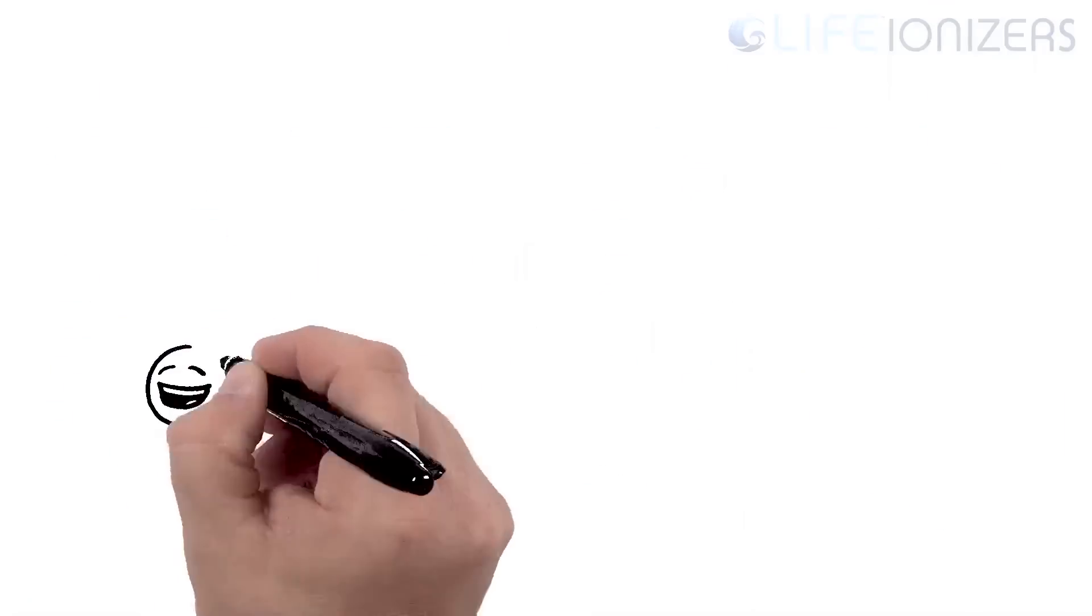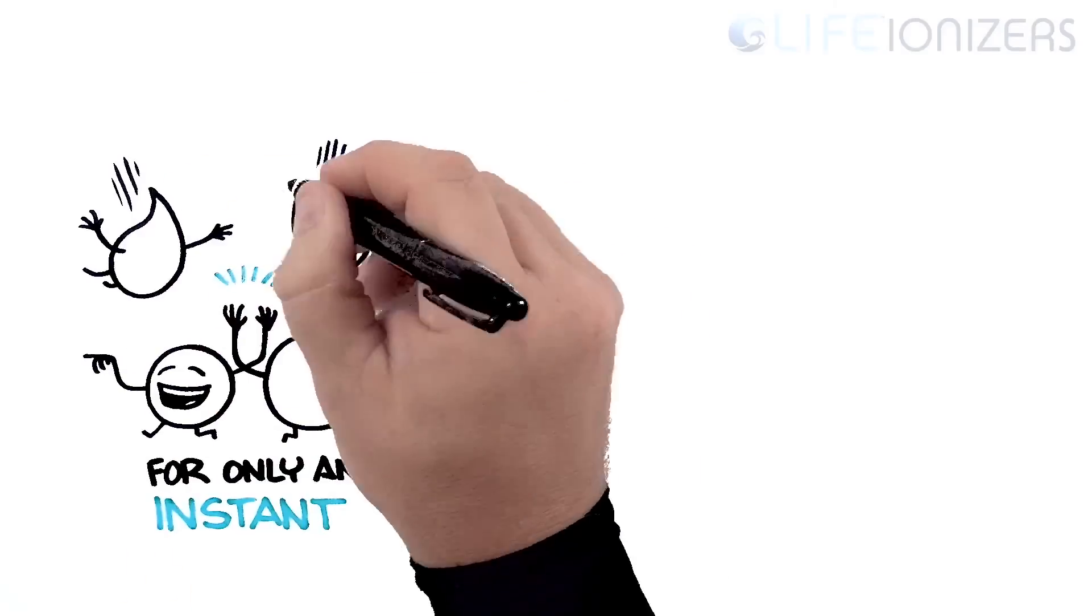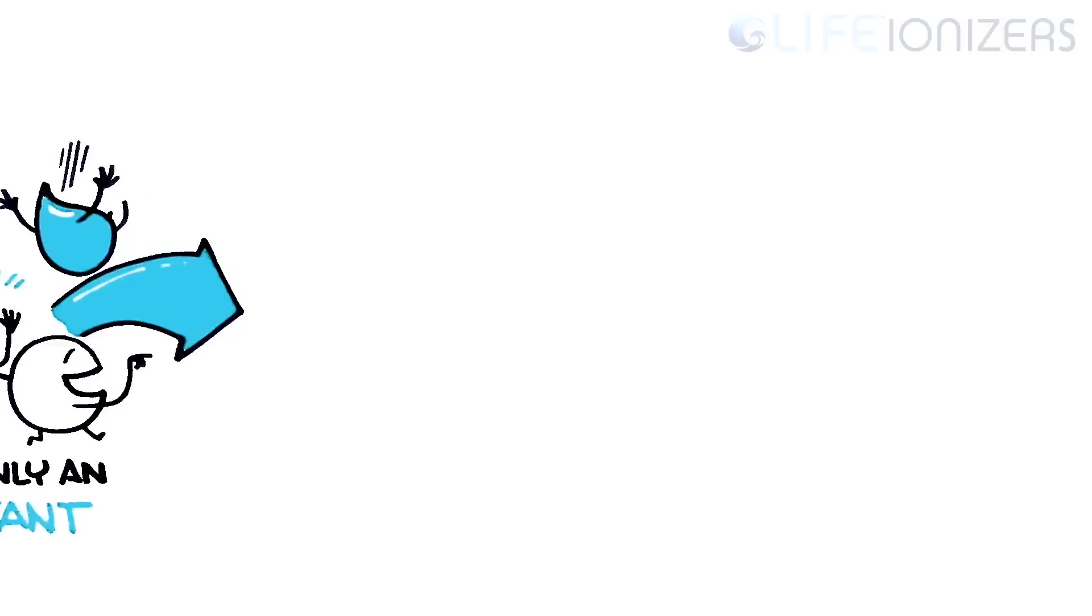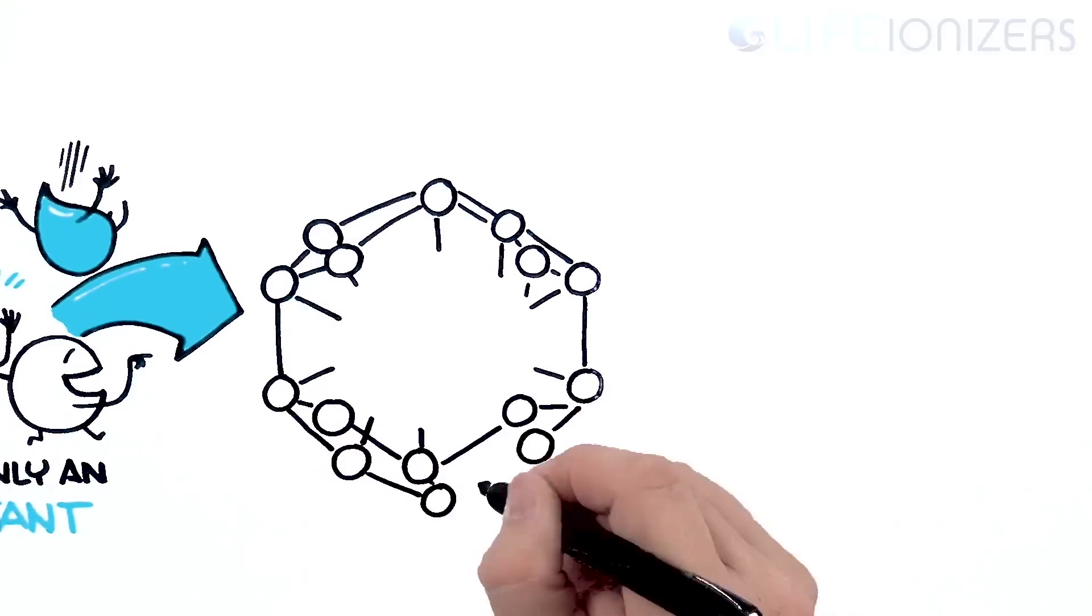On each side, the alkaline ions and the acidic ions exist on their own for only an instant before combining with water molecules. Coming together on opposite sides, the alkaline ions and water molecules form mineral hydrates.